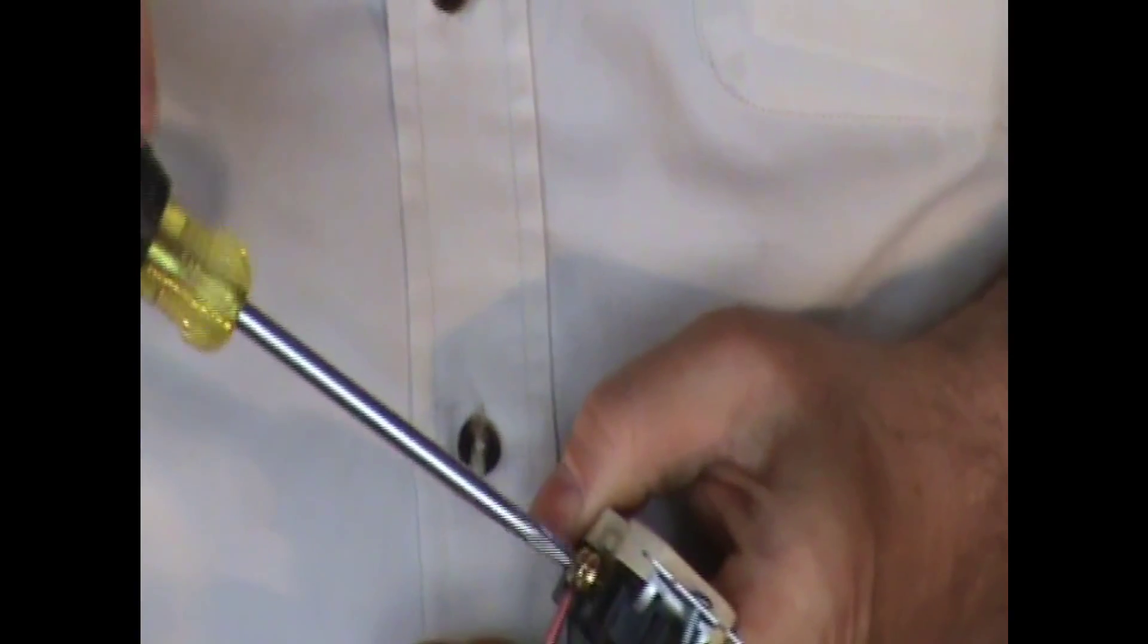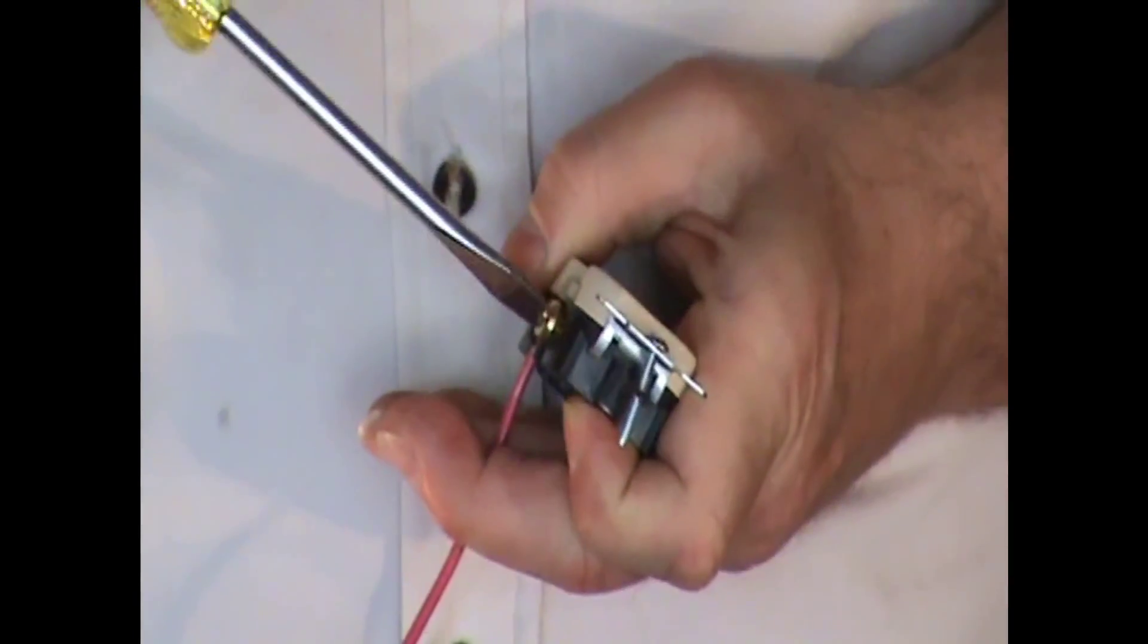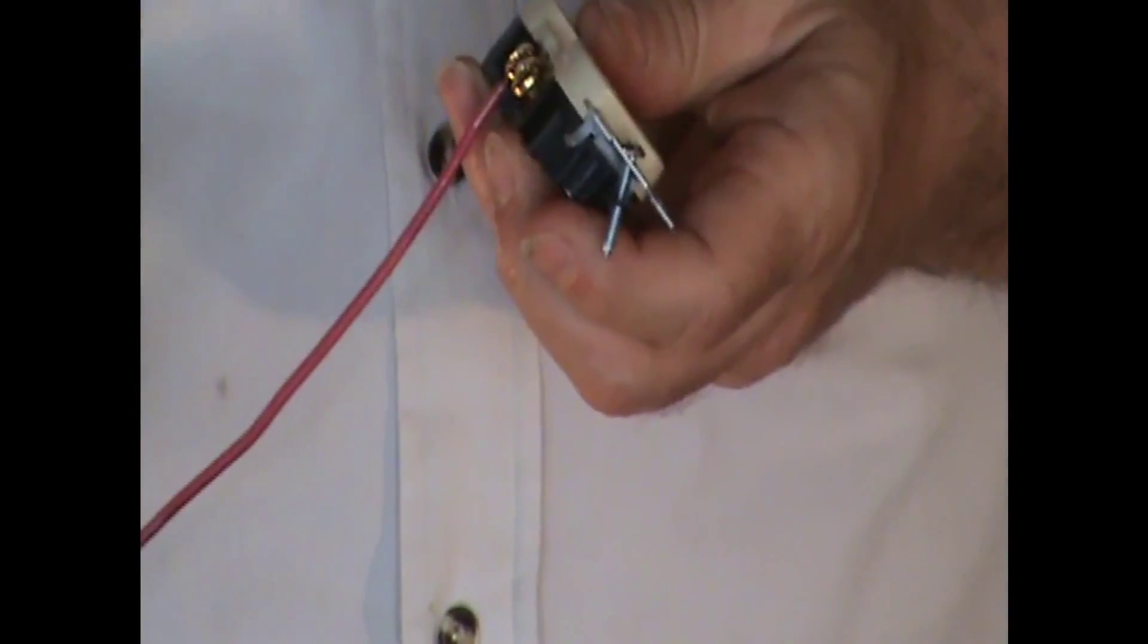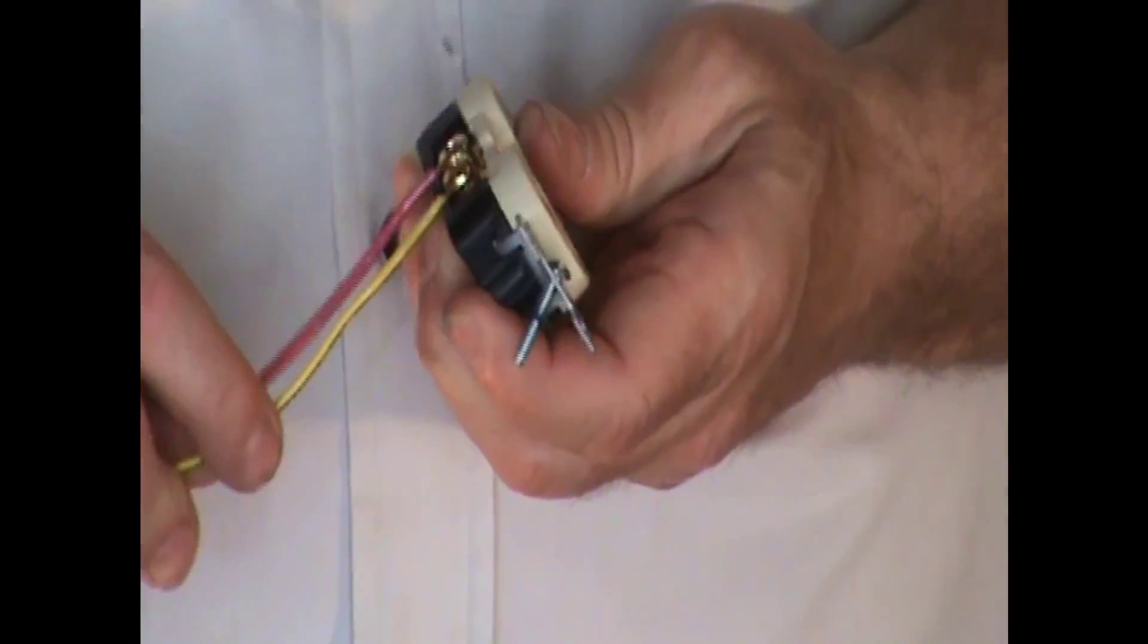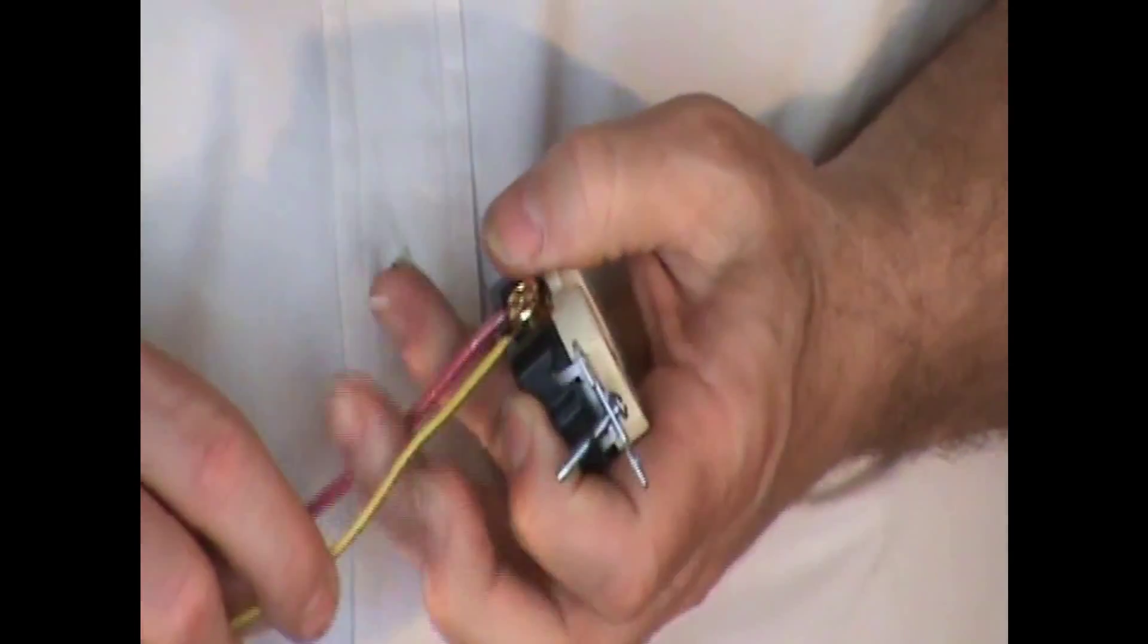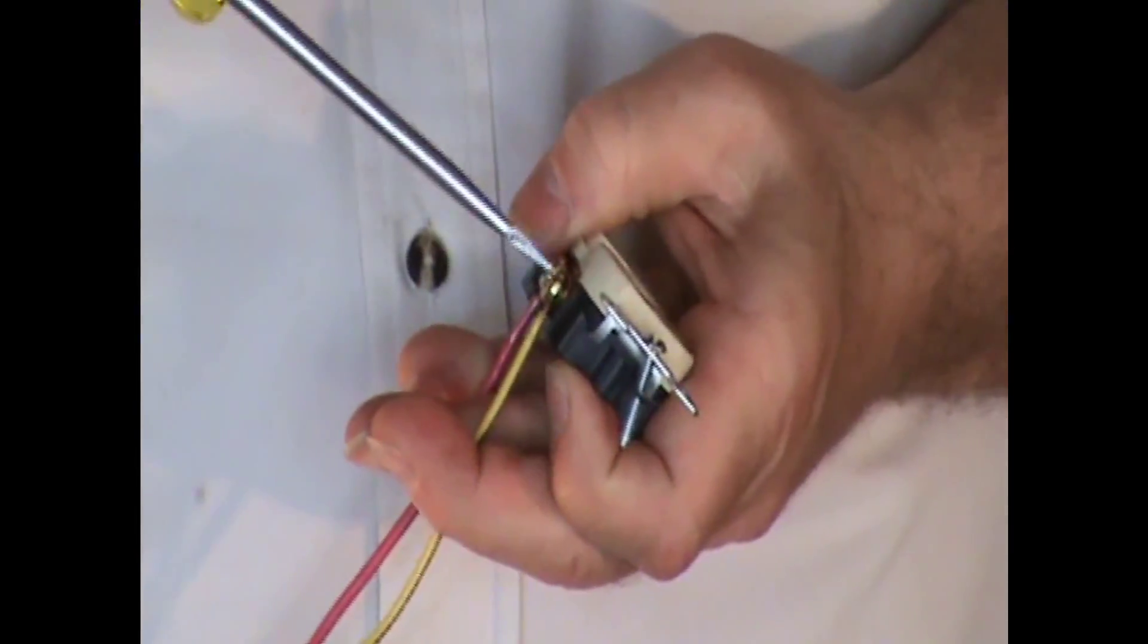Then you're going to take your switch leg wire. Again, if you watch my videos you know I use yellow and orange for switch legs. We're going to take and hook that switch leg onto this side and tighten that up.